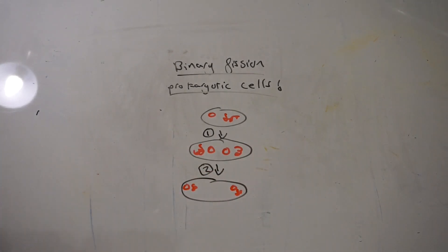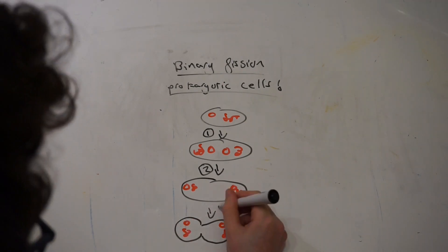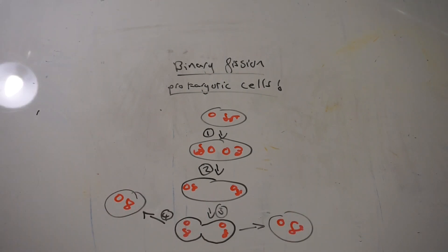Okay, so I'm just going to draw out the processes that happen when a prokaryotic cell replicates. As you can see, basically, the cell begins and then the cell contents double.